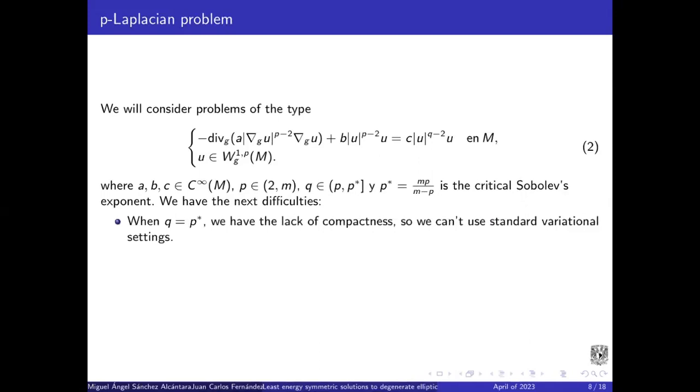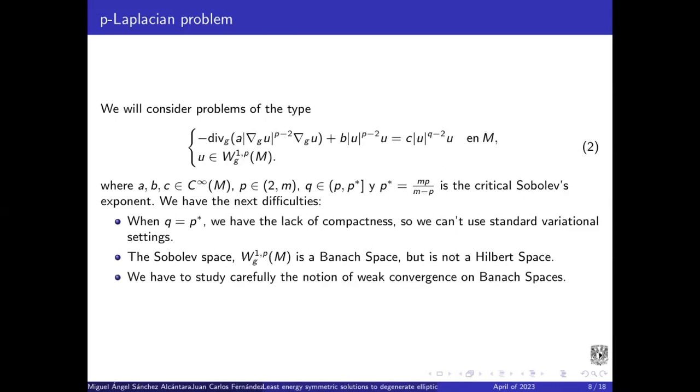And we have the next difficulty on this problem. When Q is equal to p*, we have the lack of compactness. So we cannot use a standard variational setting. The Sobolev space is a Banach space, but it's not a Hilbert space.